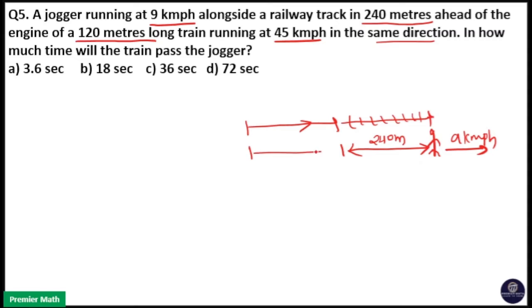The train length is 120 meters. We have to find out in how much time this train will pass this jogger. The distance covered by the train should be 120 plus 240, that is 360 meters.